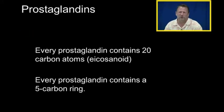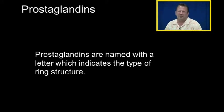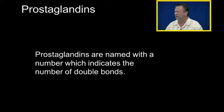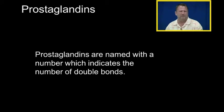Every prostaglandin contains 20 carbon atoms, which makes it an eicosanoid — icoso means 20. Every prostaglandin contains a 5-carbon ring. Prostaglandins are therefore named with a letter, which indicates the type of ring structure, and a number, which indicates the number of double bonds in the chain.